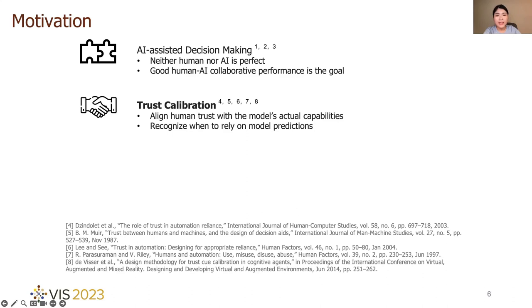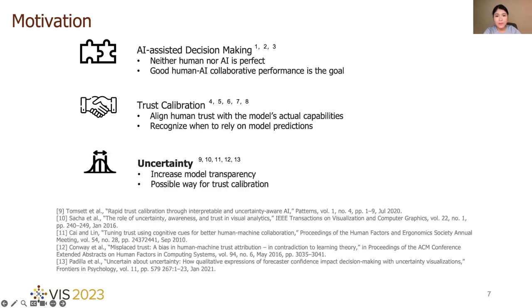Researchers found that establishing appropriate human trust in AI is very important for improving human-AI collaborative performance. Trust calibration was proposed for aligning human trust with the model's actual capabilities, so that humans can recognize when to rely on model predictions. Meanwhile, uncertainty was found to increase model transparency, as it shows what models did not know, which can facilitate trust calibration in some cases.